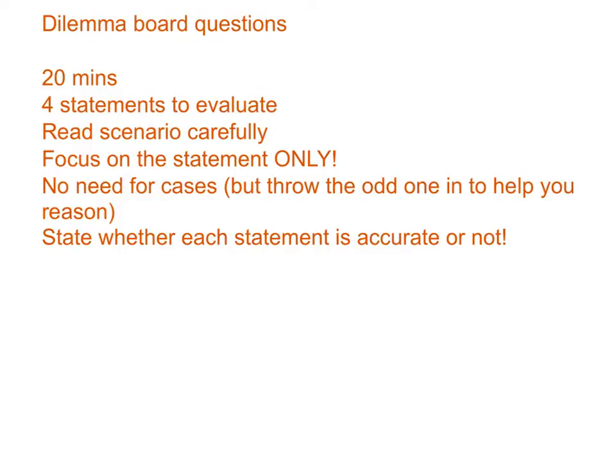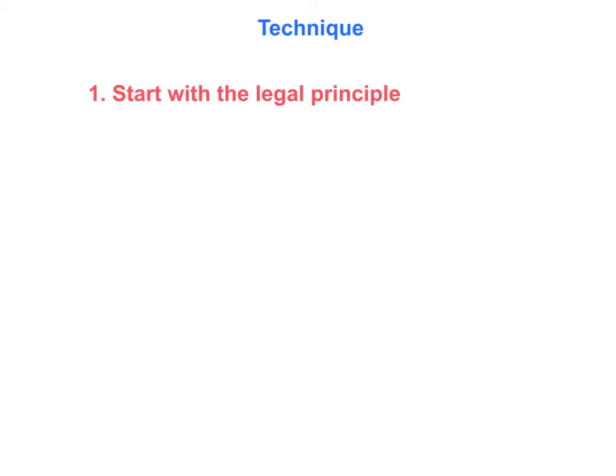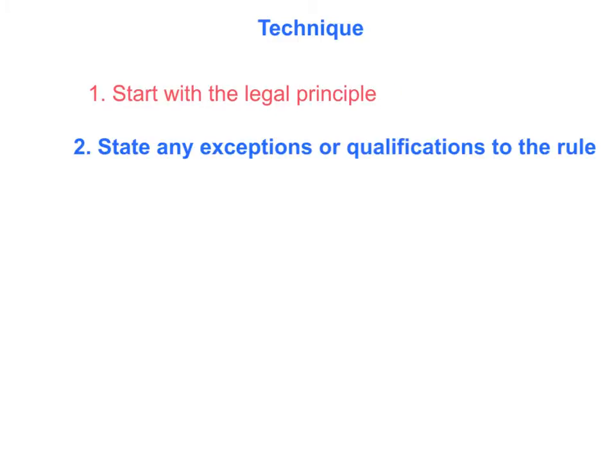What you need to do is read that scenario very carefully, work out what the issues are, and for each one you evaluate, focus on that statement only — don't bring in anything that's not relevant to the accuracy of that sentence. You don't need to include cases, although sometimes throwing the odd one in is helpful to reason through the problem. Our technique always starts with a statement of the legal principle — for example, the presumption in social and domestic cases that there's no legal intent.